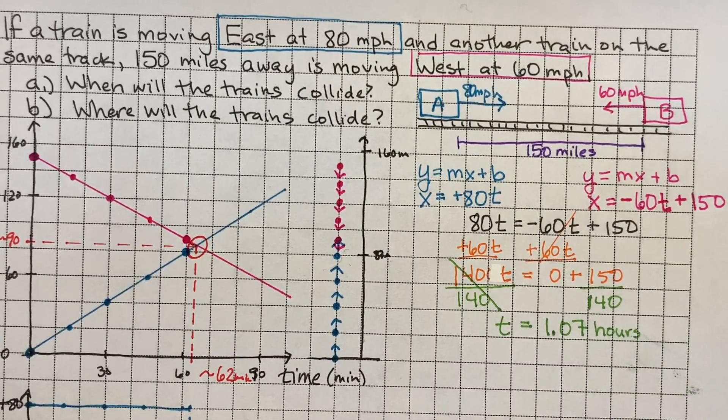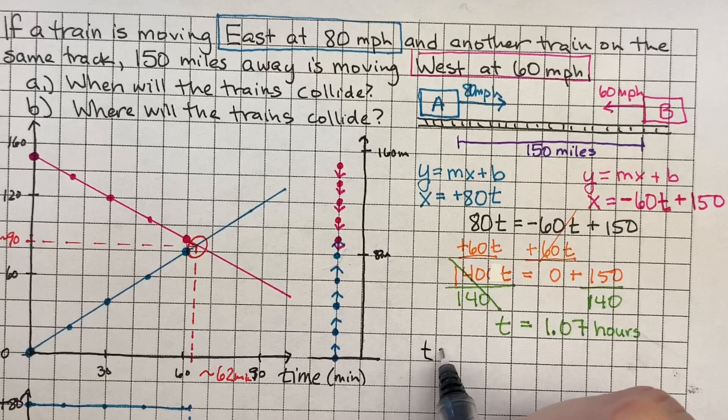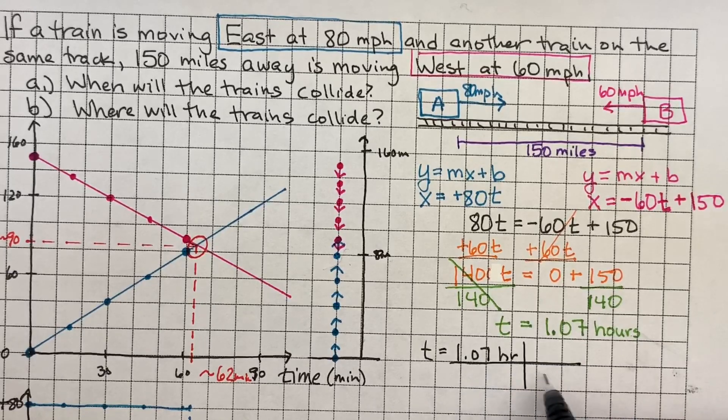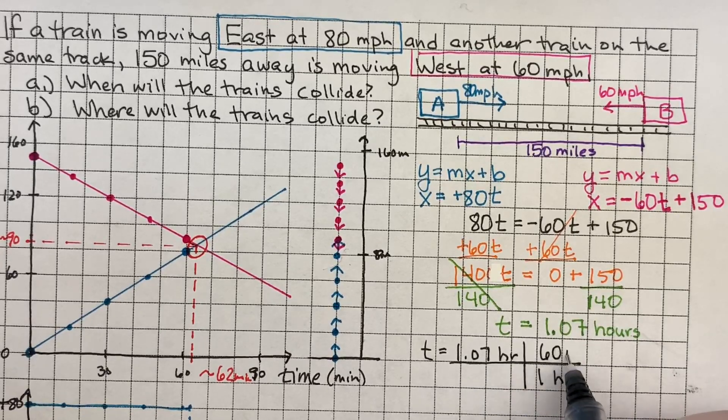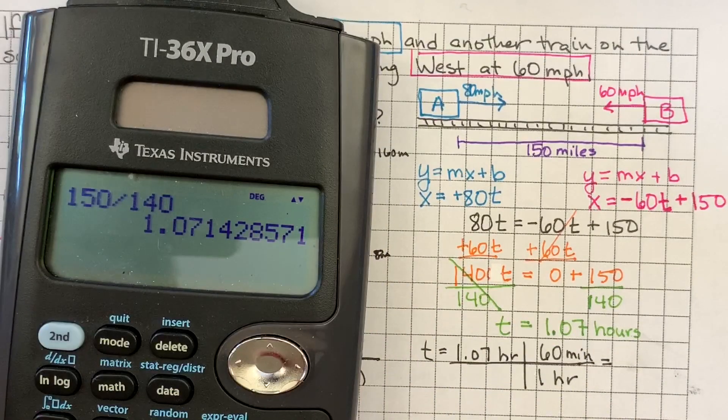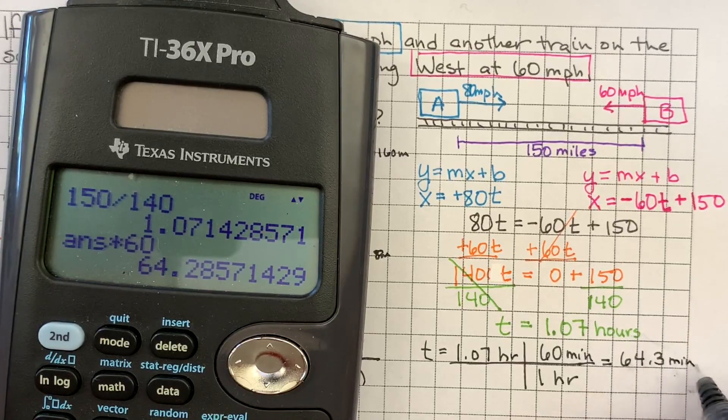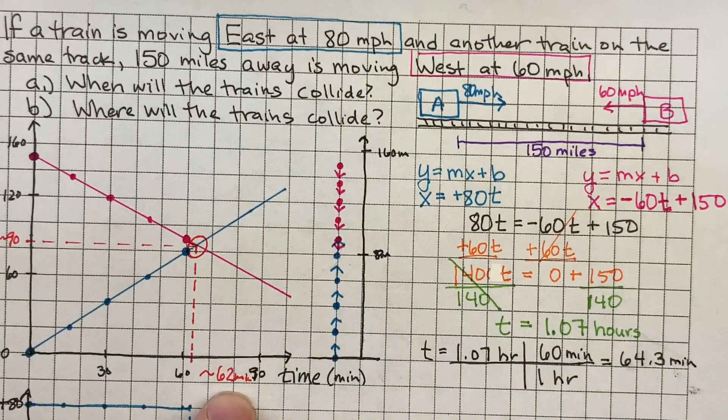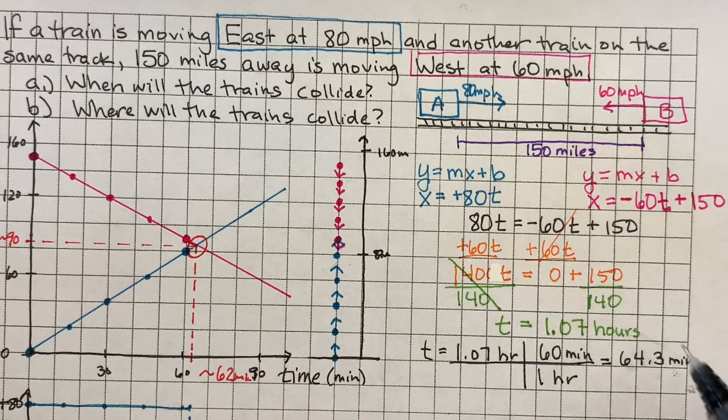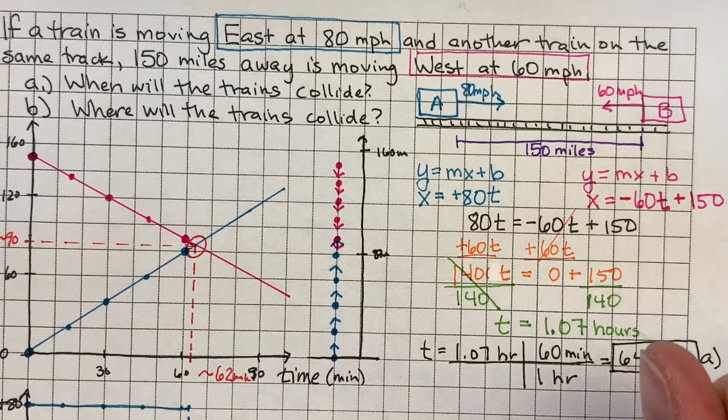If I want to figure out how long that was in minutes, I can say that one hour is equal to 60 minutes. And then I can take that 1.07 times 60, and I get 64.3 minutes. And look, I thought it was about 62. That's pretty close. So those match. So the answer to A. This is the answer to A. The trains collide after 64.3 minutes.